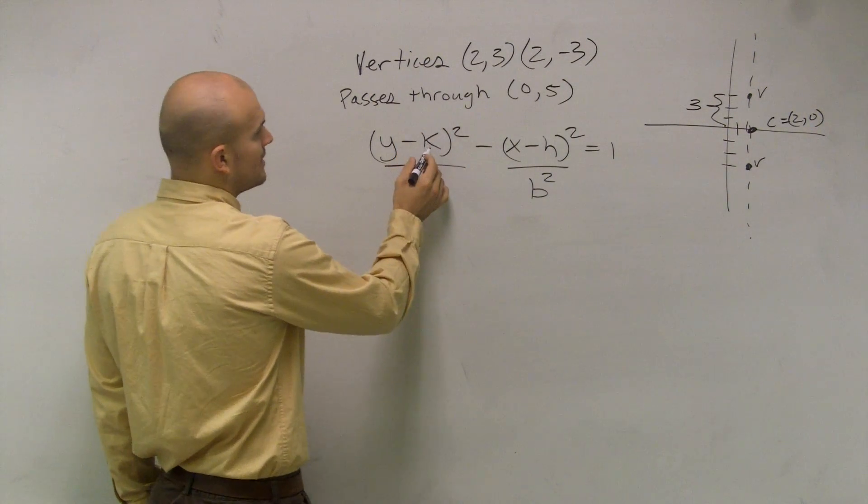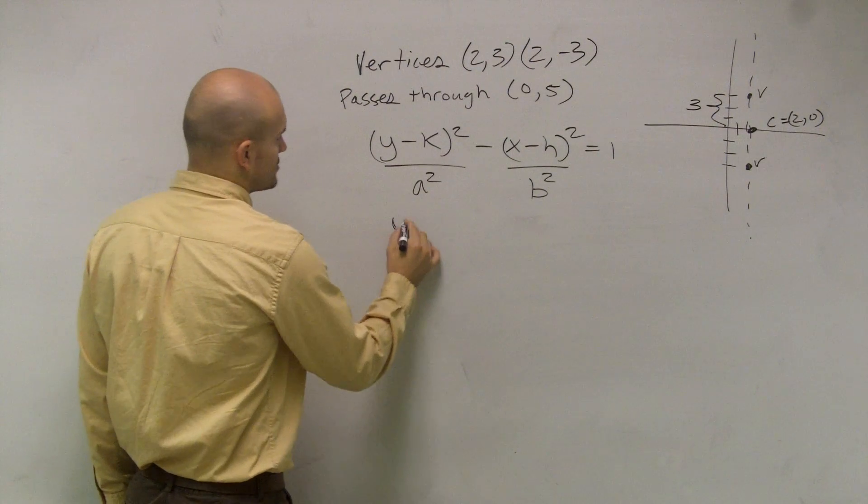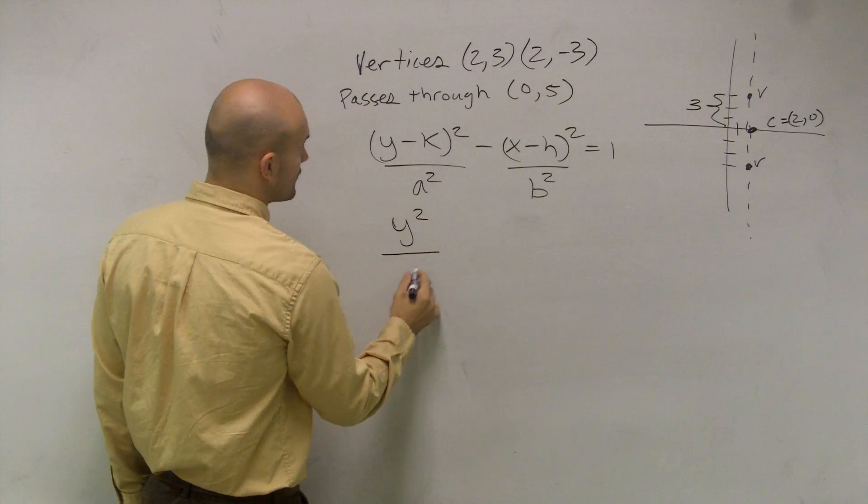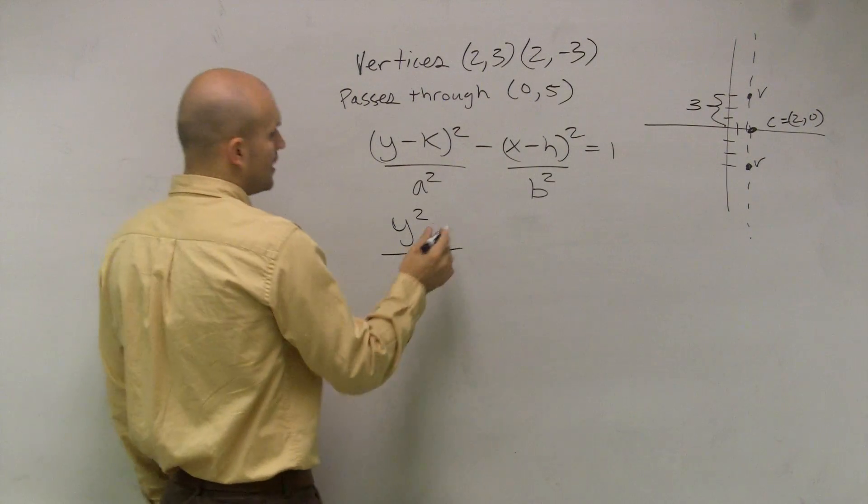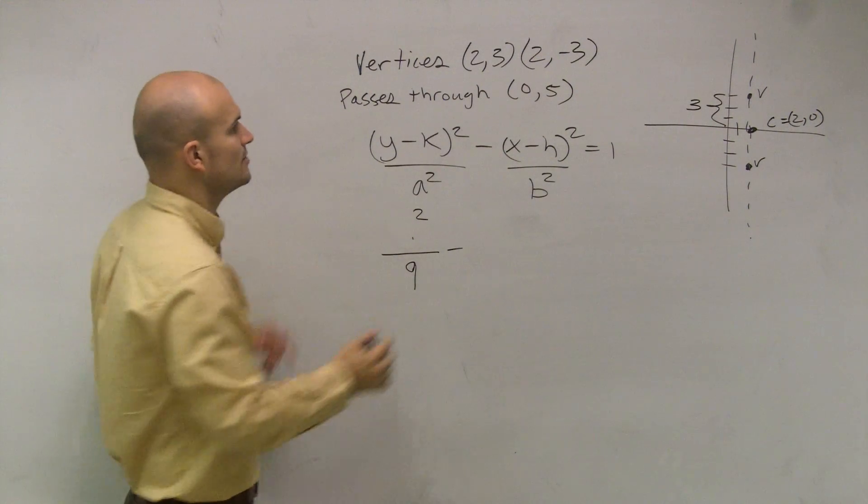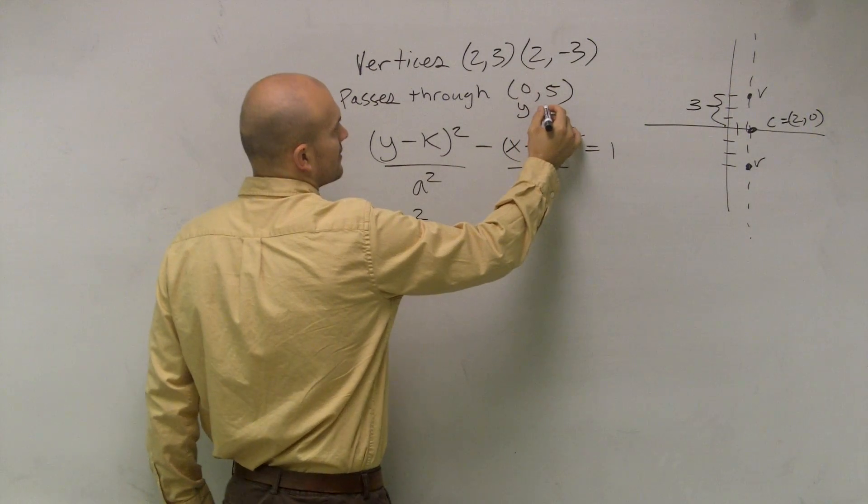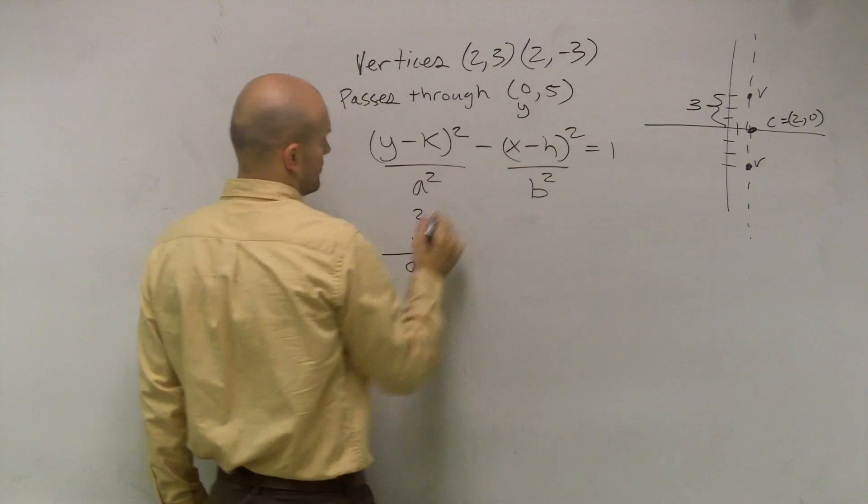So I say, pass through the y minus k, which is 0. So I have y squared all over 3 squared, which is 9, minus... Now, what can we use, since it goes to the point (0,5), we can say, right?